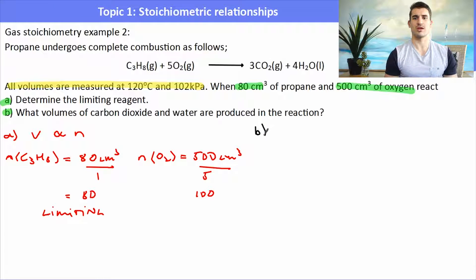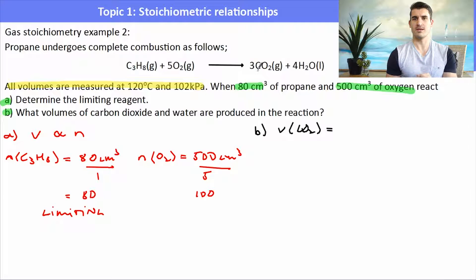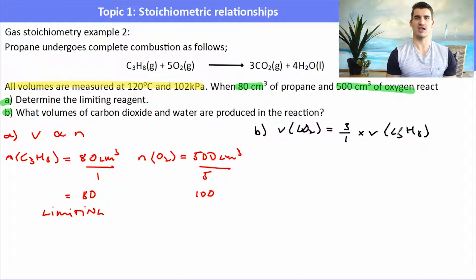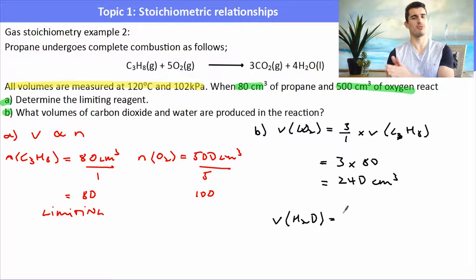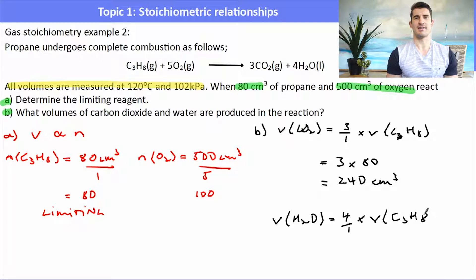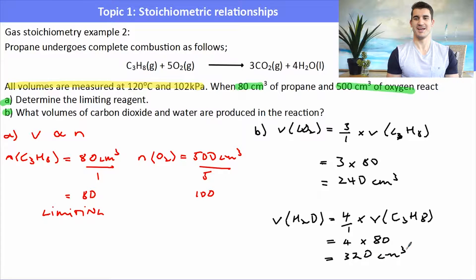Using the volume of propane, the ratio of CO2 to propane is 3:1, so volume of CO2 = 3 × 80 = 240 cm³. The ratio of water to propane is 4:1, so volume of water = 4 × 80 = 320 cm³. We could use PV = nRT here but it would take much longer.